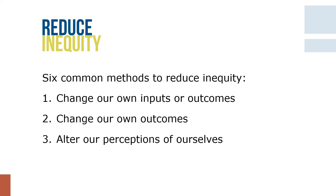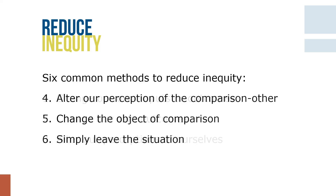People may use one of six common methods to reduce inequity. First, we may change our own inputs. Second, we may change our own outcomes. Third, a more complex response is to alter our perceptions of ourselves or our behavior. Fourth, we may alter our perception of the comparison others' inputs or outcomes. Fifth, we may change the object of comparison, and finally, as a last resort, we may simply leave the situation.